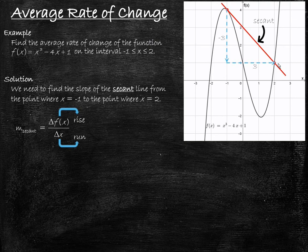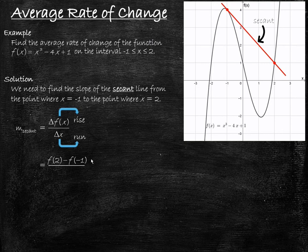However, we often don't have a graph available, or the numbers are difficult to read off of the graph. So we'll show this example using the equation for our function as well. Once more we do Δf(x) over Δx, working with x values of negative 1 and 2. In our numerator we need to find f(2) and subtract f(−1), which gives us the change in f(x). In the denominator we subtract our x values: 2 minus negative 1.